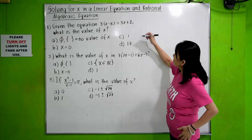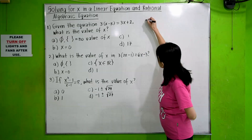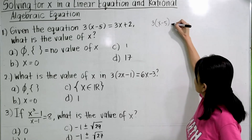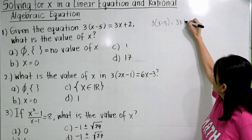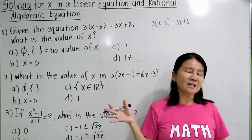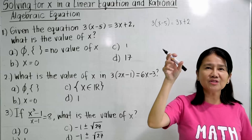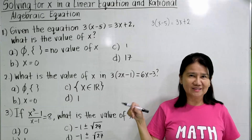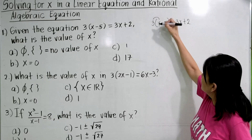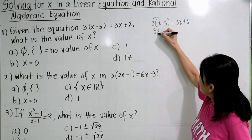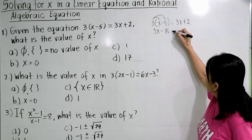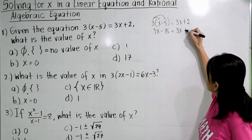We copy the given first: 3 times the quantity X minus 5 equals 3X plus 2. By the way, don't forget to subscribe and press the bell button. So we distribute 3 here, and we have 3X minus 15 equals 3X plus 2.